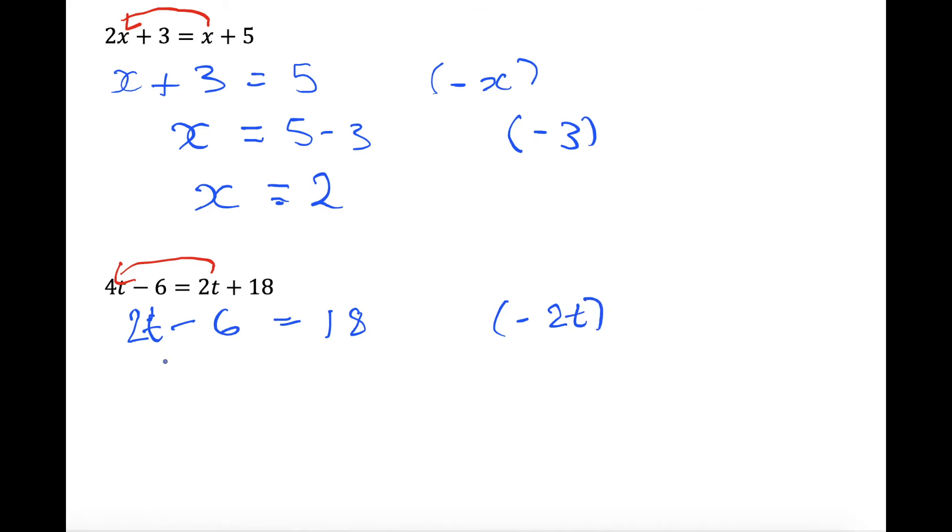So this line we did minus 2t. And now we want to get our constants all on the right hand side. So we're going to plus 6 to both sides to get rid of this minus 6 here. So 2t minus 6 plus 6 is 0, and then 18 plus 6 gives 24. So we're doing plus 6. And then we need to divide by 2 on both sides to get this to just be 1t. So we're doing 2t divided by 2 equals 24 divided by 2. So this cancels leaving t equals 12.